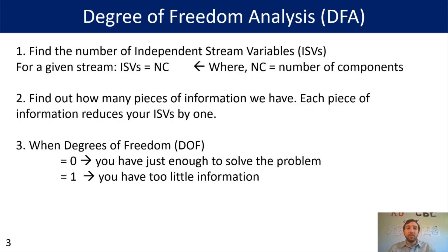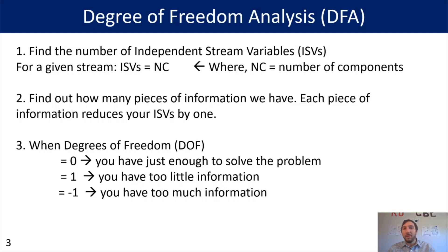We can also have a degree of freedom of negative one, and for that it means we have too much information. So that can mean the process is over-specified — where I may tell you I need a temperature of this and a pressure of that, and there is no physical way that is happening. Or it can also mean that you've gotten one bonus piece of information that just makes your life easier in solving the problem. If you have too little information, it's an open-ended type of problem and there are going to be a lot of different solutions you can obtain.